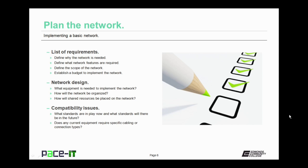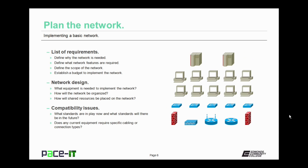The first thing you should do is create a list of requirements. In order to make that list, you need to define why the network is needed. That will help you define what network features are required. Then you need to define the scope or size of the network. Once you have those, they will help establish a budget to implement that network.